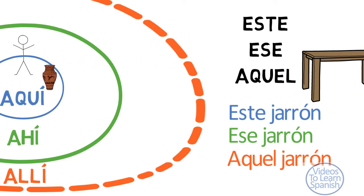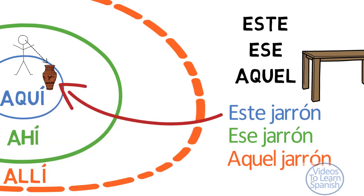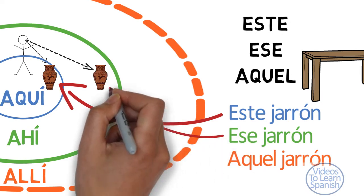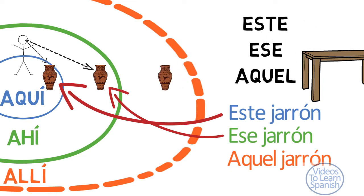The vase is close to the speaker: este jarrón. The vase is not that close to the speaker, or closer to the listener: ese jarrón. The vase is far from the speaker: aquel jarrón.